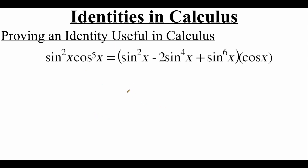Now we're going to take a look at another example where we take the simpler left hand side and do some work to make it into the more complicated right hand side. We've got sine squared of x times cosine to the fifth power of x, and we're going to show that that's equal to sine squared of x minus two sine to the fourth power of x plus sine to the sixth power of x, all times cosine of x.